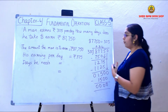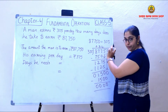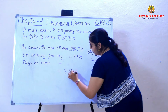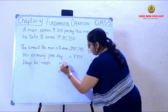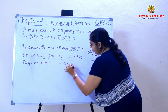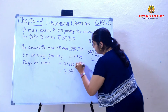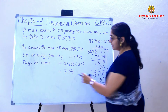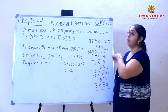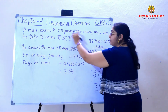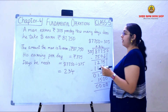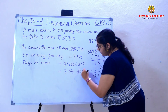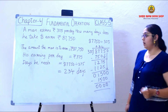So from this I can say that the number of days he needs to earn Rs. 87,750 at Rs. 375 per day is 234 days. So we divided 87,750 by 375 and the answer is 234 days.